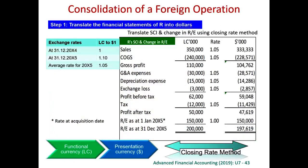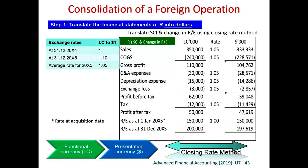First, we translate the income statement and statement of retained earnings. Using the closing rate method, all income and expenses should be translated using the average rate. Notice how we denote the exchange rate — it is LC to one dollar. The average rate is 1.05 LC to one dollar. Therefore, in order to translate from LC to dollar, we should divide the figures by 1.05.